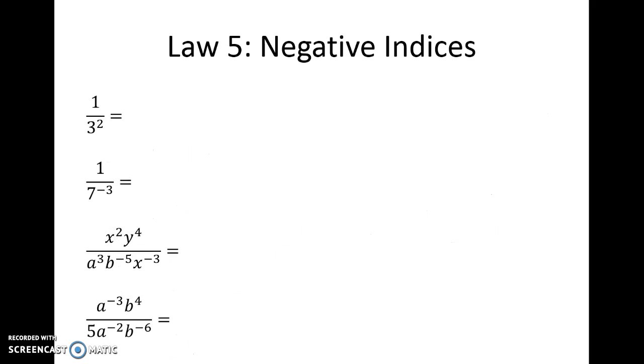Moving along now to some examples of how this works. So if we were to simplify or rewrite these in a different form, 1 on 3 to the power of 2 could be rewritten with a negative indice of 3 to the negative 2.